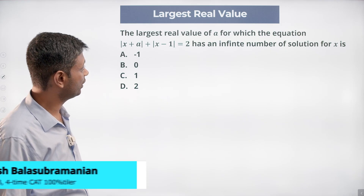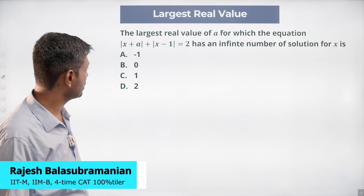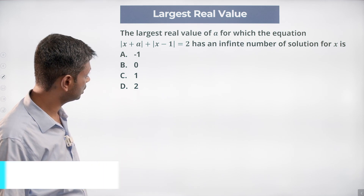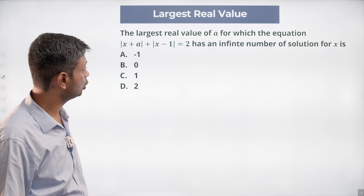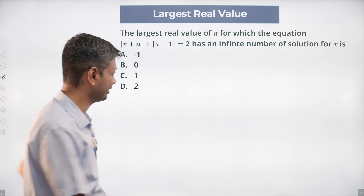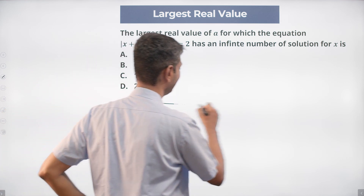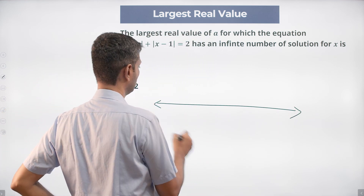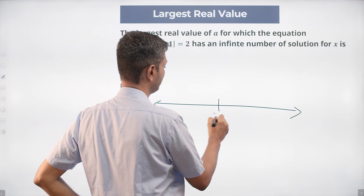The largest real value of a for which the equation |x + a| + |x - 1| = 2 has an infinite number of solutions for x. Nice, simple question.